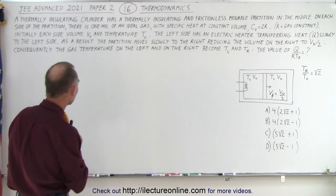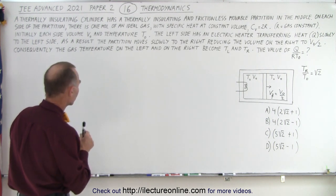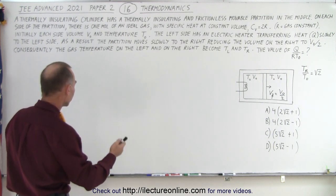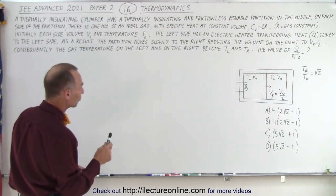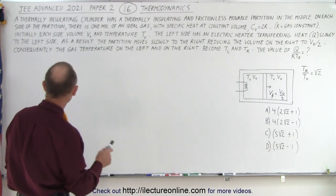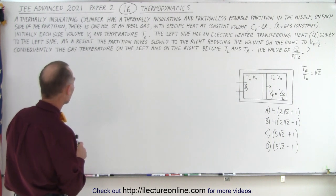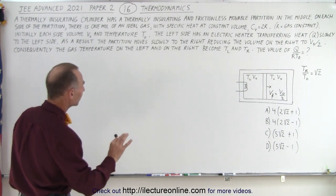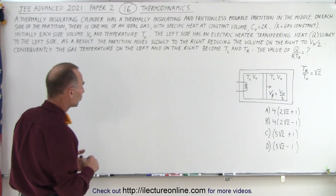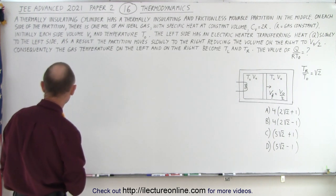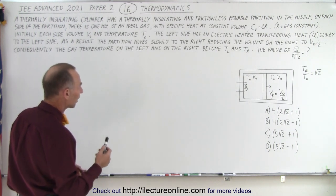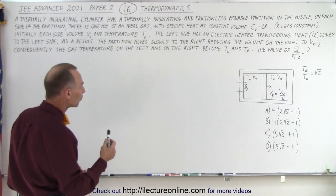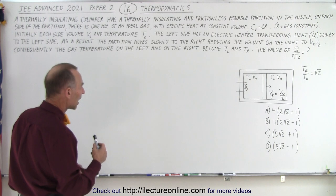Initially, each side has volume V₀ and temperature T₀ — the initial volume and initial temperature. The left side has an electric heater transferring heat Q slowly to the left side. As a result, the partition moves slowly to the right, reducing the volume on the right to half of the initial volume. Consequently, the gas temperature on the left and on the right become T_L and T_R. The value of Q divided by R T sub nought is...